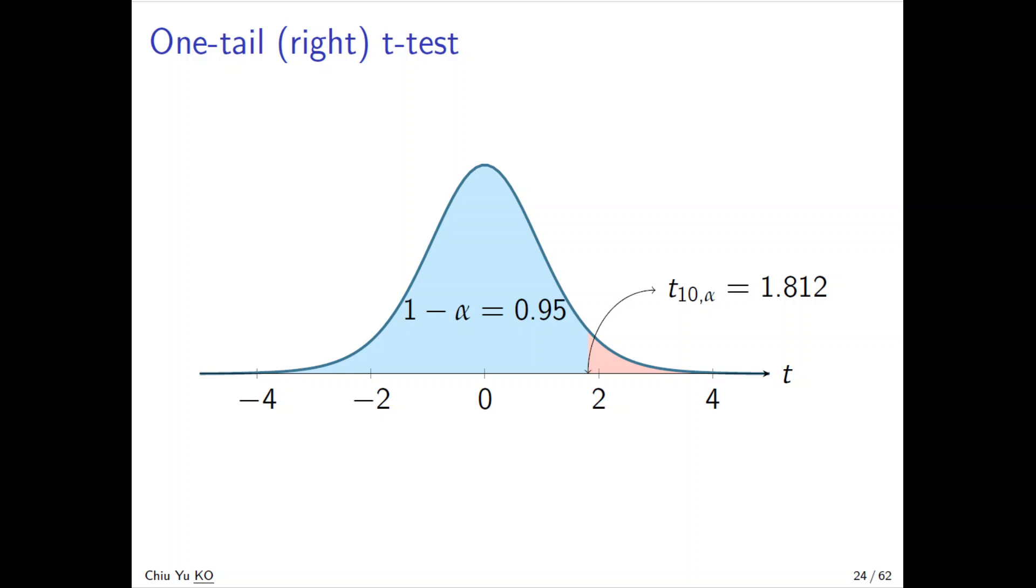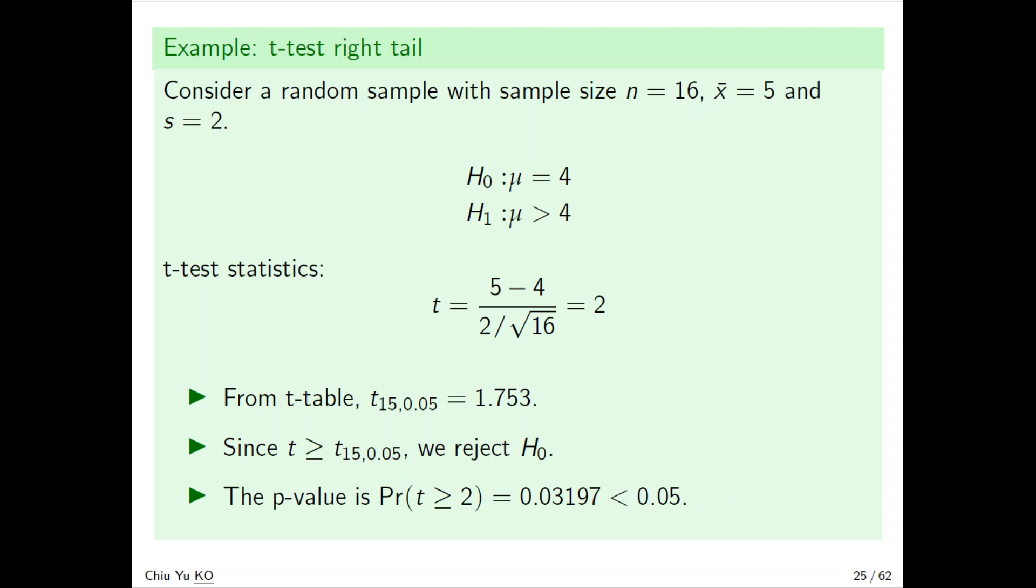Here we have sample size n=16, sample mean x̄=5, and sample standard deviation s=2. Everything the same: the t-test statistic is (5-4)/(2/√16) = 2. Look at the t-table - because n is 16, we look at n-1 = 15. At 5% significance, it's 1.7355. Since 2 is bigger than this critical value, we reject. The p-value, when t is bigger than 2, is Pr(t≥2) = 0.03197, which is less than 0.05. Be careful - you have to look at the degrees of freedom, which equals 15.